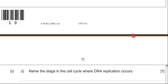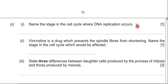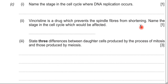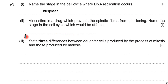Moving on to part C, this is about cell division. C1 asks you to name the stage in the cell cycle where DNA replication occurs — that's going to be in interphase. Part C2 is about a drug which prevents the spindle fibres from shortening, and you're asked which stage of the cell cycle would be affected. The spindle fibres shorten during the anaphase stage.